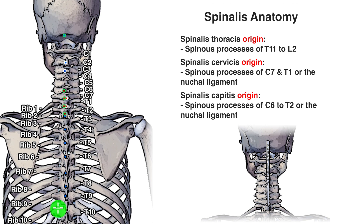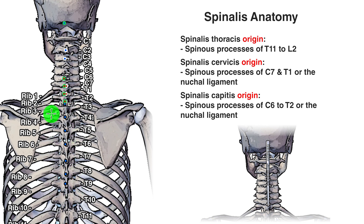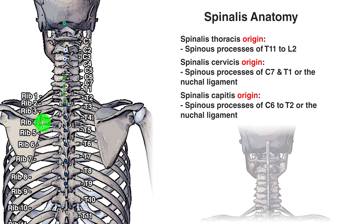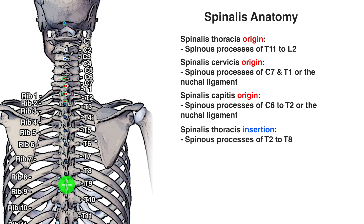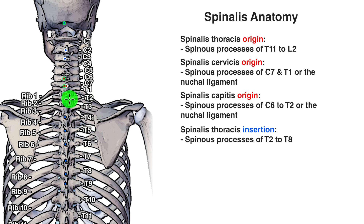We'll start with the thoracis section, marked with a black outline. The insertions for that are on the spinous processes of T2 all the way down to T8. You might notice the insertion appears over where T9 is labelled, but bear in mind it's the bony projection coming off the back of T8 — the spinous process — that extends downward, so it's the projection of T8, not T9. The same applies to T2 at the top.